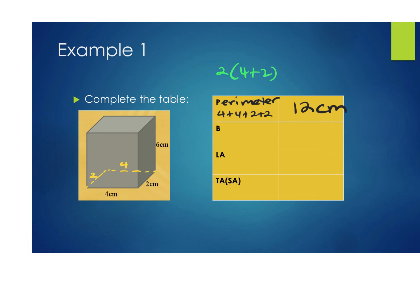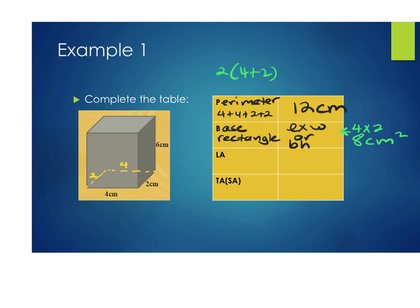Capital B represents the area of your base shape. In this case the base is a rectangle, so area equals length times width, or base times height — 4 times 2 gives 8 centimeters squared. For the lateral area, do perimeter times the height of the prism. The height of the prism is 6 centimeters, so 12 times 6 gives 72 centimeters squared.